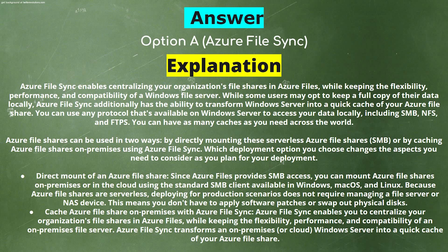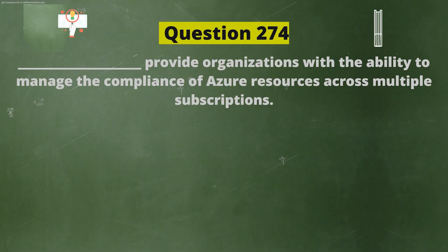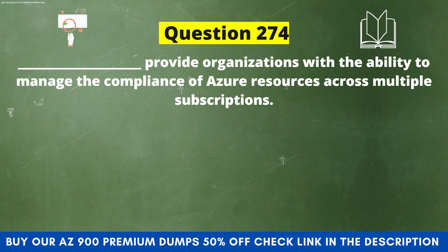Option two — cache Azure file share on-premises with Azure File Sync: Azure File Sync enables you to centralize your organization's file shares in Azure Files while keeping the flexibility, performance, and compatibility of an on-premises file server. Azure File Sync transforms an on-premises or cloud Windows Server into a quick cache of your Azure file share.